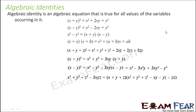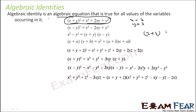We have read about this in previous classes. An algebraic identity is an algebraic equation that is true for all values of the variables occurring in it. For example, (x+y)² = x² + y² + 2xy. This is true for any value of x and y. For example, if x=2 and y=3, then (2+3)² = 2² + 2×2×3 + 3². Left side: 5² = 25. Right side: 4 + 12 + 9 = 25. Both sides are equal.